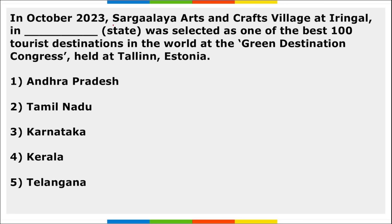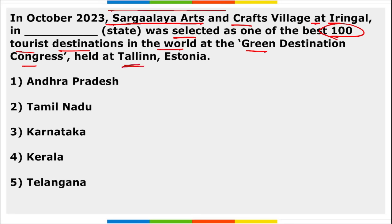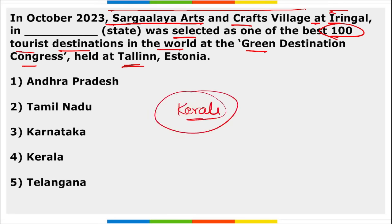Next, Sargalya Arts and Craft Village at Iritty in Kerala State was selected as one of the best 100 tourist destinations in the world at the Green Destination Congress held in Estonia.